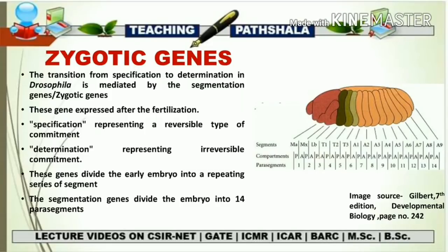What is specification and what is determination? Whenever the cell fate is decided after differentiation of a particular cell, that is called specification. Specification may be reversible or irreversible — the cell is committed to its fate, but it still has the capability to switch to some other fate depending on the environment. That is specification: a reversible type of commitment. The second state is determination, which represents an irreversible commitment. Once a cell is determined, it will not change its function regardless of the conditions or environment it encounters.